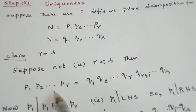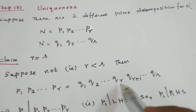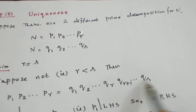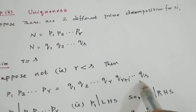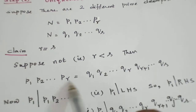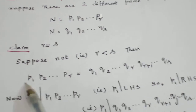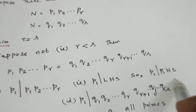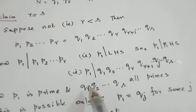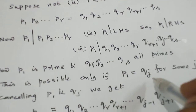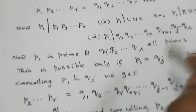So p1 · p2 · ... · pr = q1 · q2 · ... · qr · qr+1 · ... · qs, since s > r so some more prime numbers remain. Now p1 divides the left-hand side since p1 is one of the factors, so p1 divides the right-hand side also. So p1 equals qj for some j. Let us cancel them.